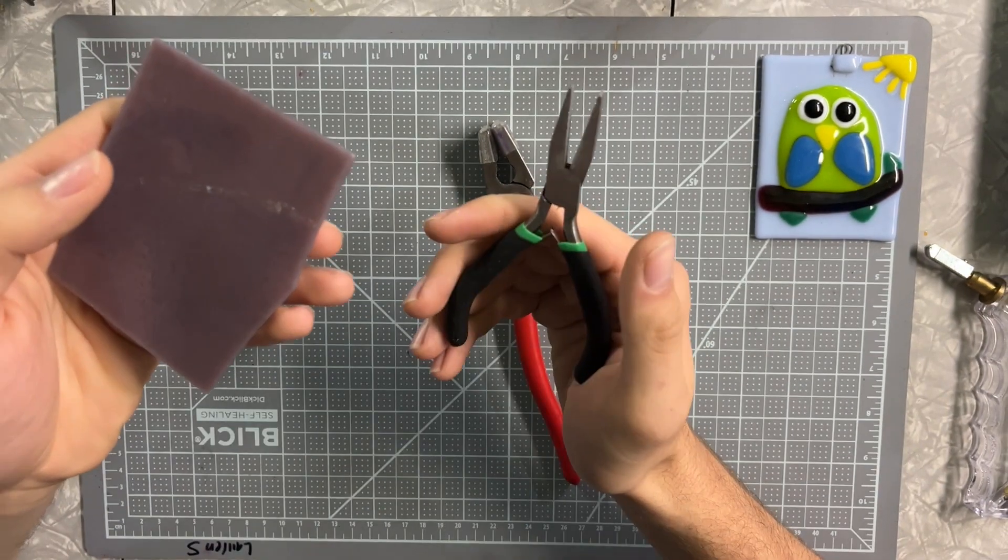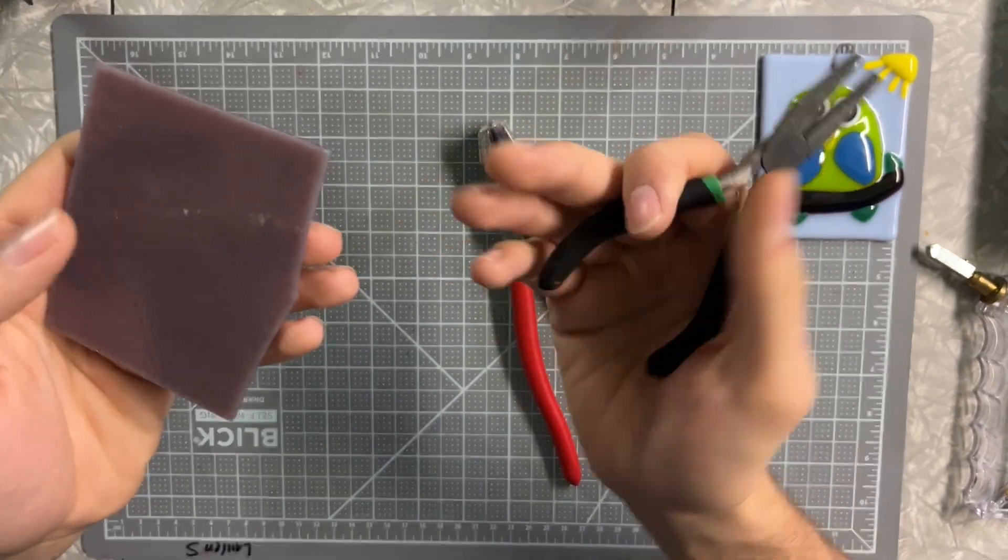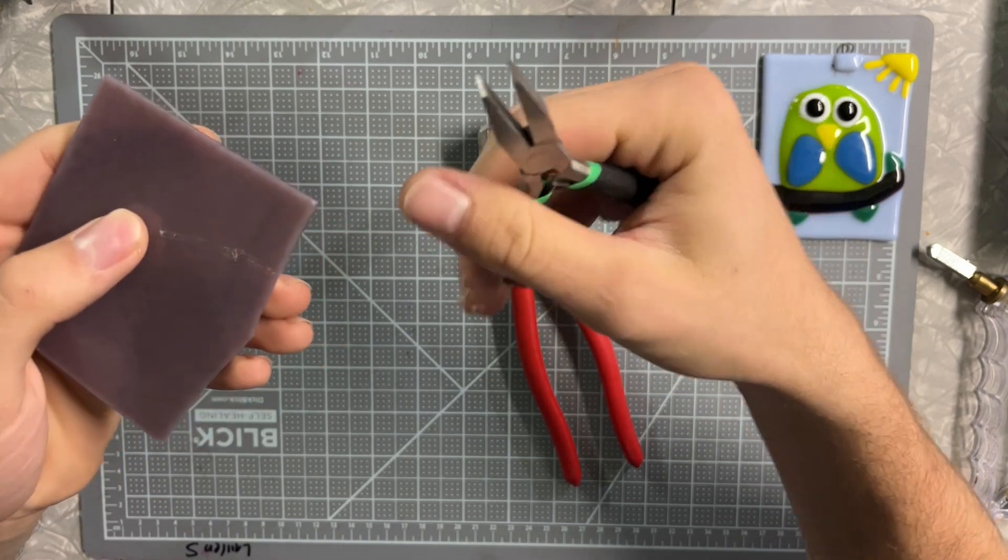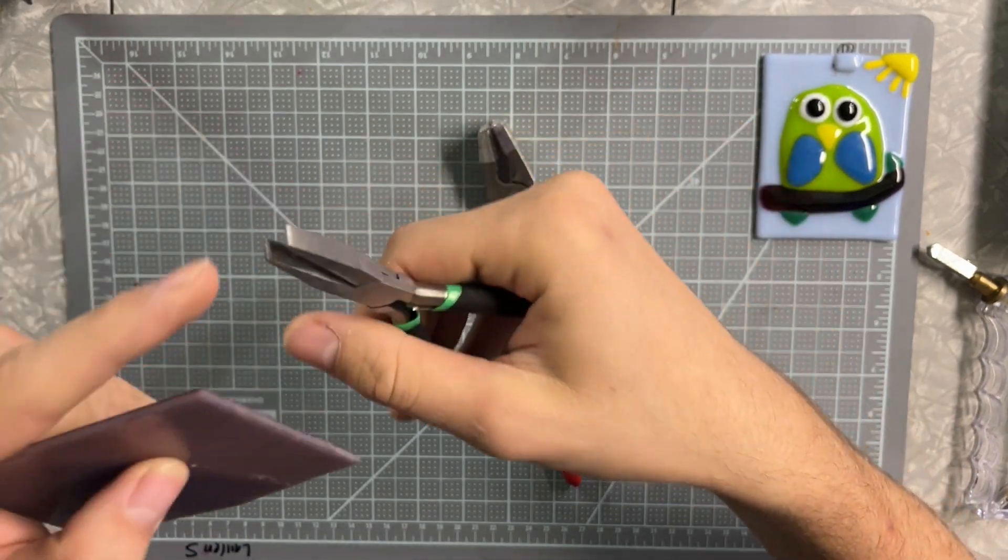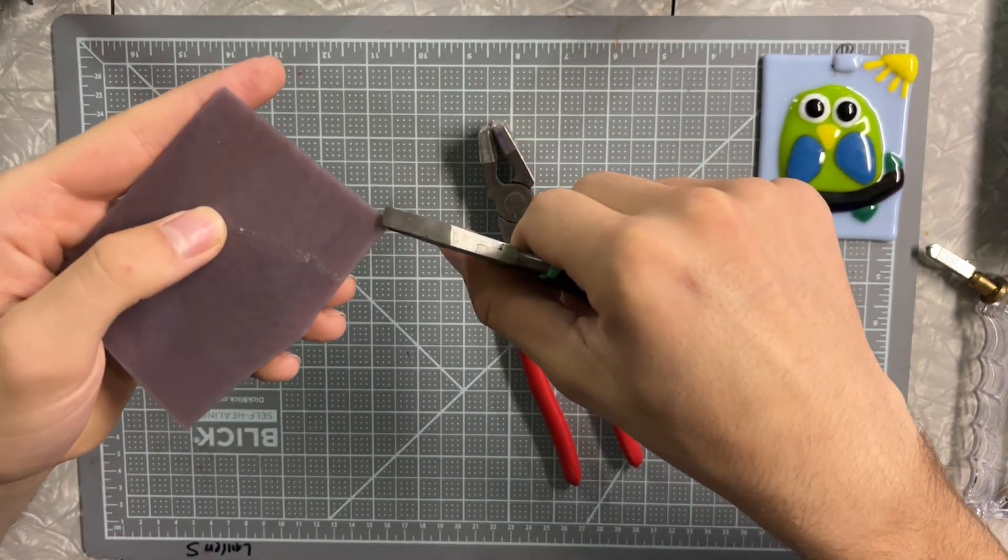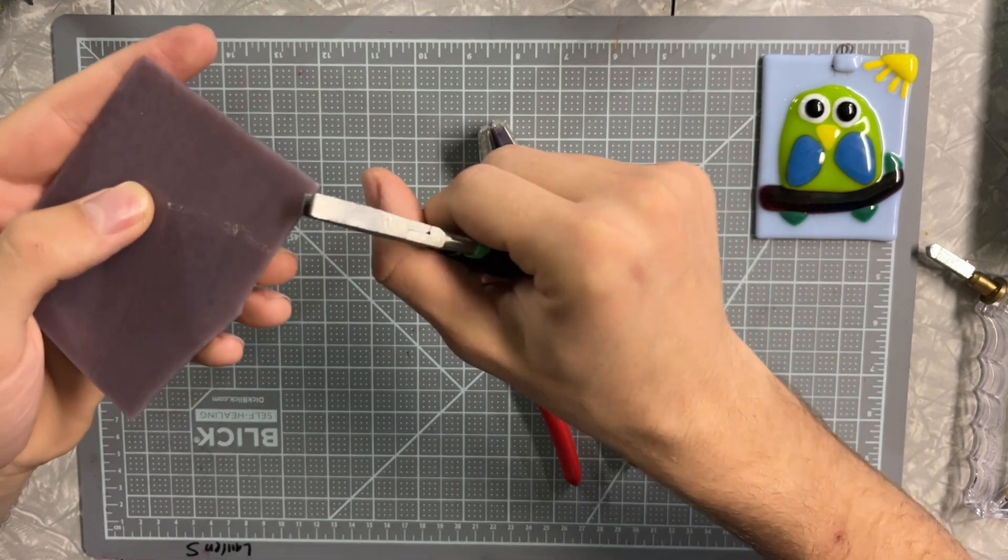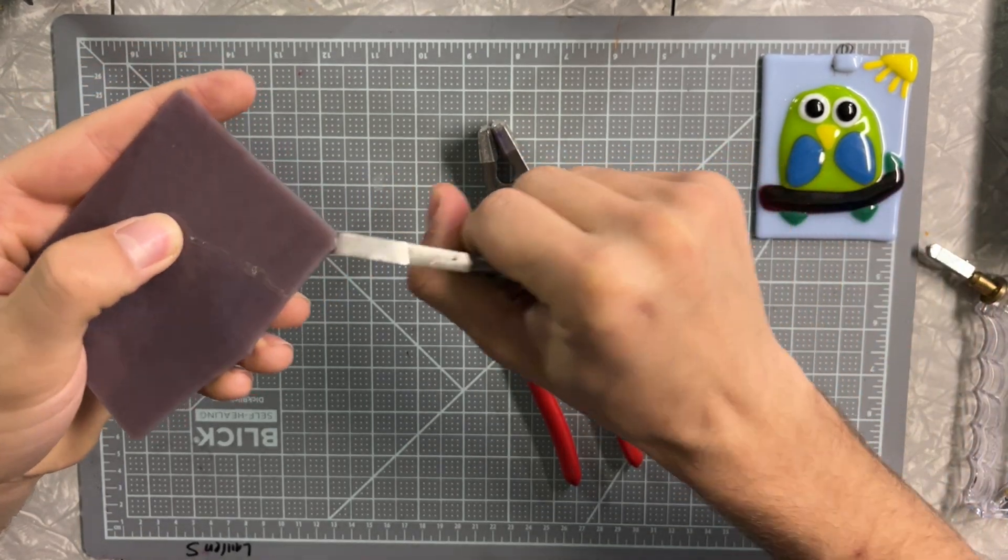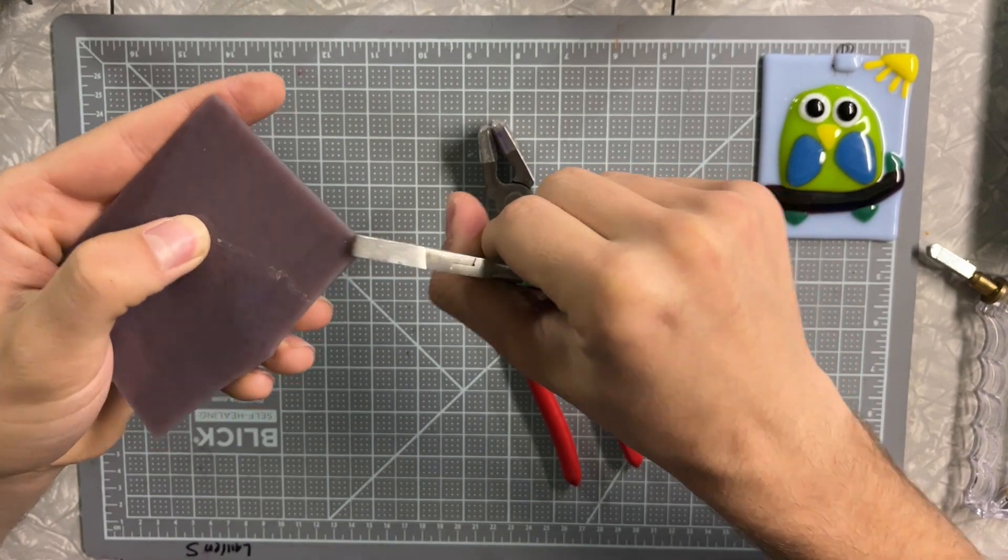What the grozing pliers do is you can actually round off these corners when you're cutting glass. You can do this by simply using the very tip of the pliers and grabbing it, and you're going to pull down and away from the glass, and it'll kind of just round it off.